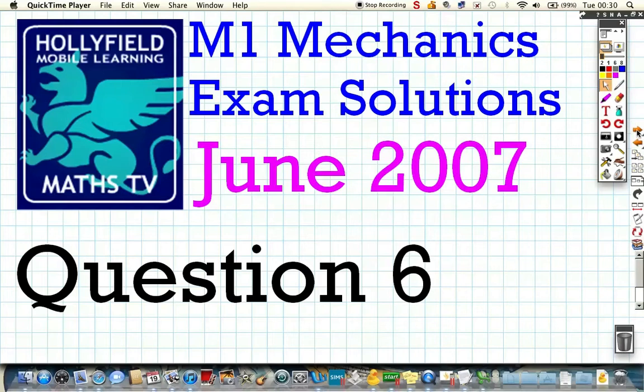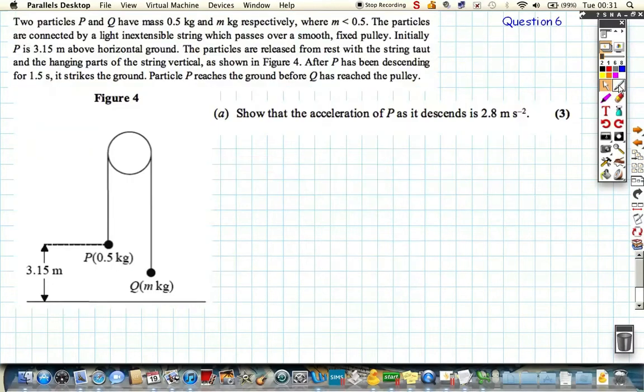Question 6 from the June 2007 Mechanics paper. We're given two particles as demonstrated in the picture. An important piece of information to start with is that Q is less than P. So what's going to happen is the system is going to move in this direction. Q is going to accelerate up and P is going to accelerate down because P is the heavier one.